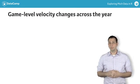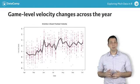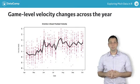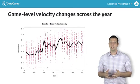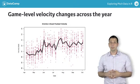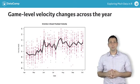Finally, you evaluated velocity and its game-by-game variability across the season. While there was a pretty clear uptick in velocity in July, there was also one just before June began.